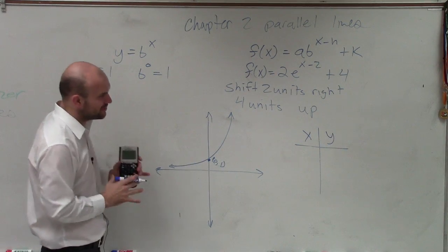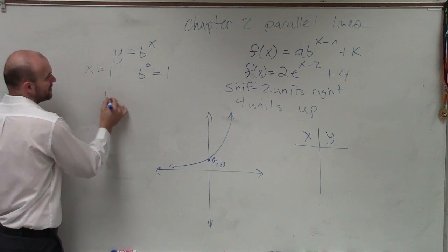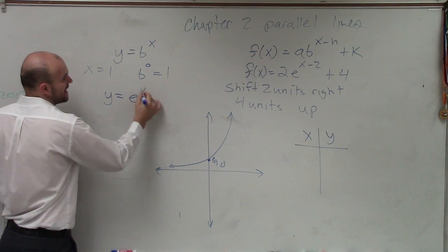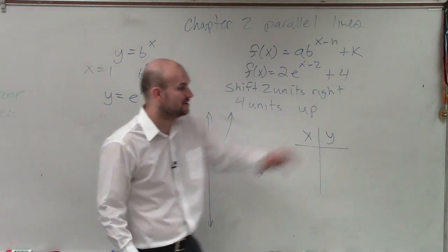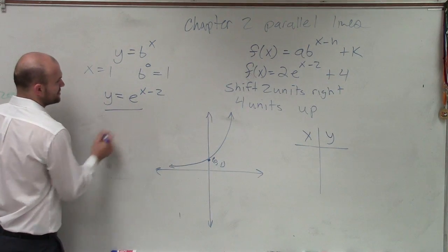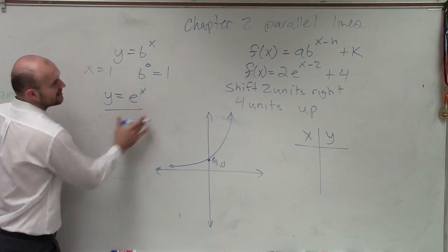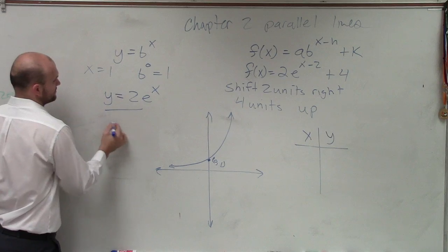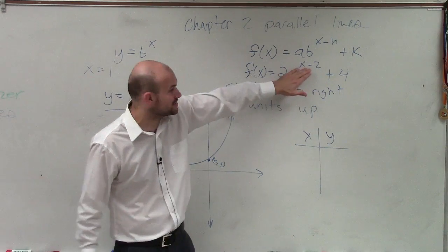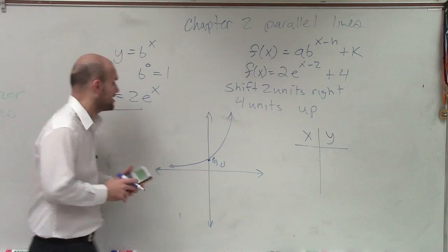The other thing that you can do is if you could take your parent graph, y equals e to the x minus 2, you can plug in values for this before we apply our transformations. And that's where I was coming into our e to the, 2 times e to the x. You just take your parent graph. No transformations, no minus 2 or no plus 4. Just take the parent graph.